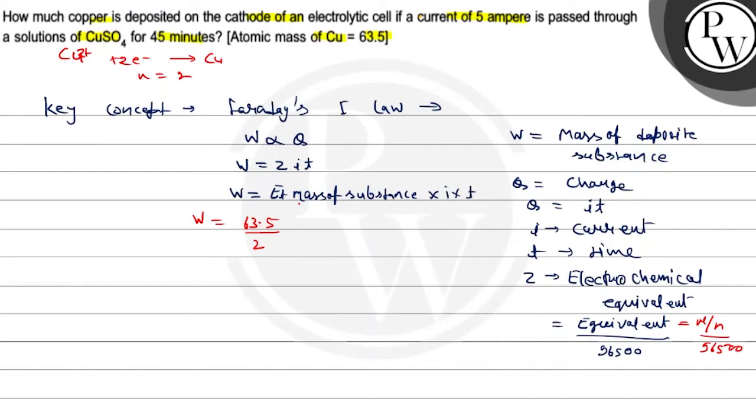So here we write 96,500 coulomb into 96,500 coulomb. Current is 5 ampere and time is 45 minute or in seconds, 45 into 60. And then calculate the value.